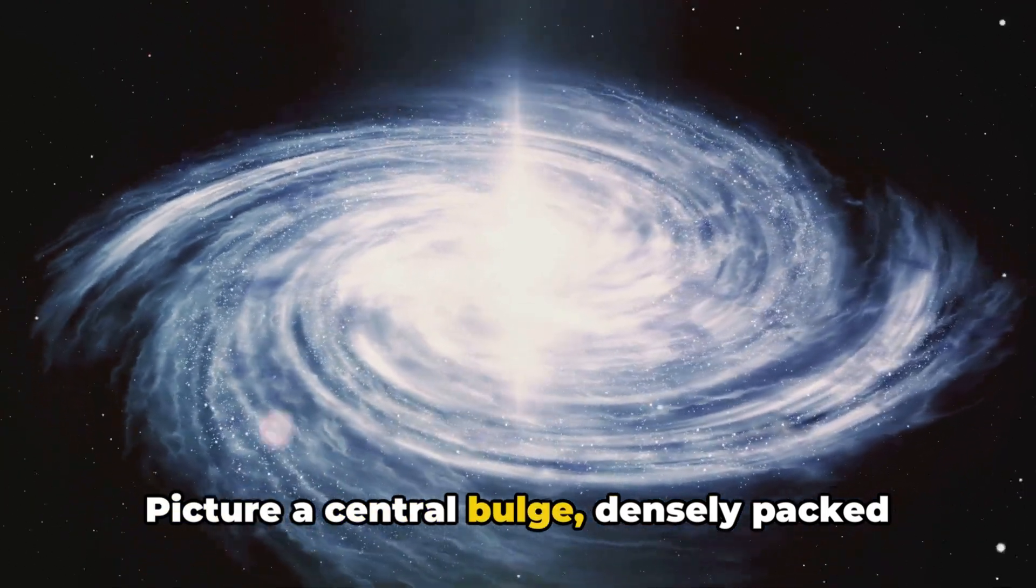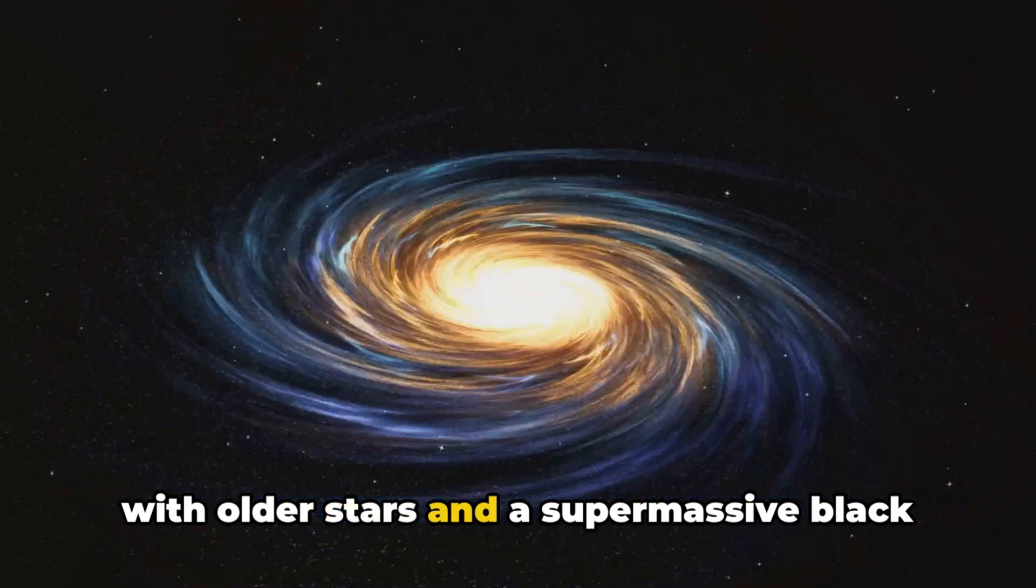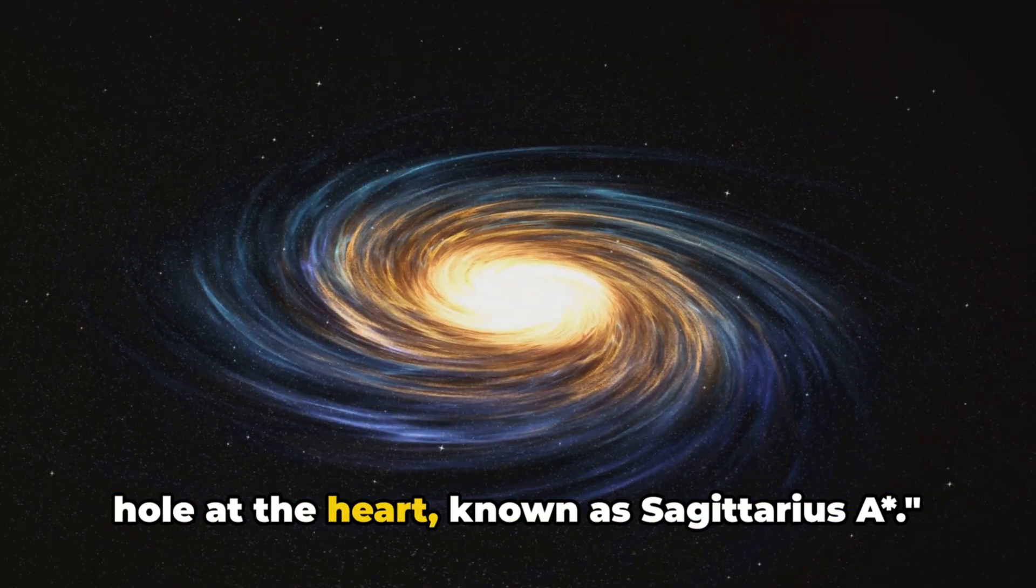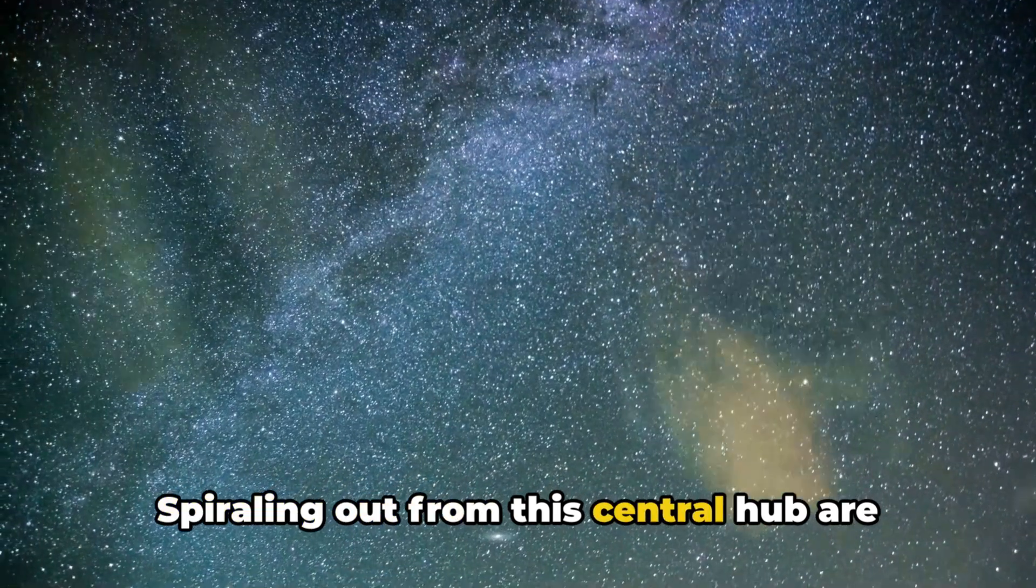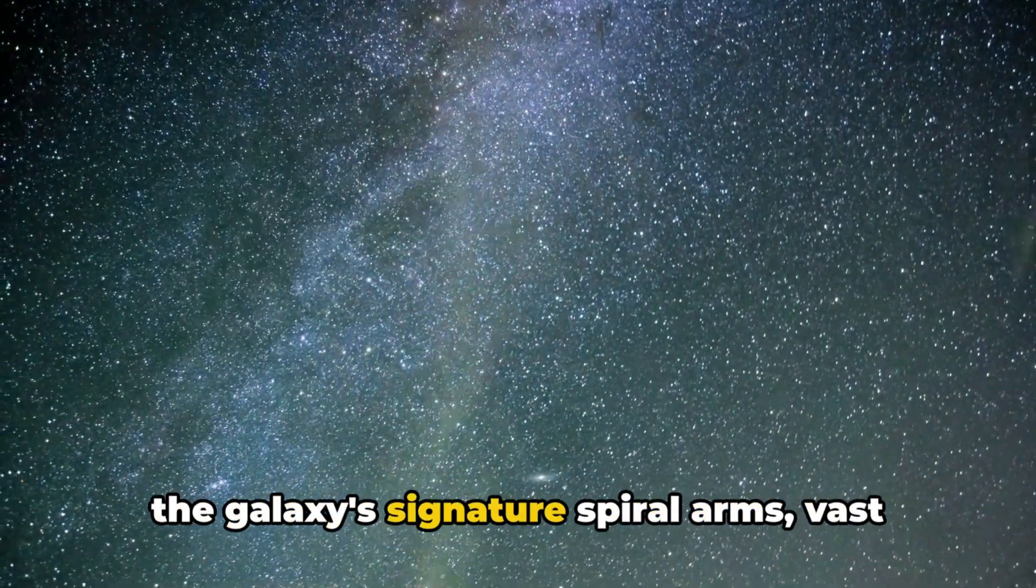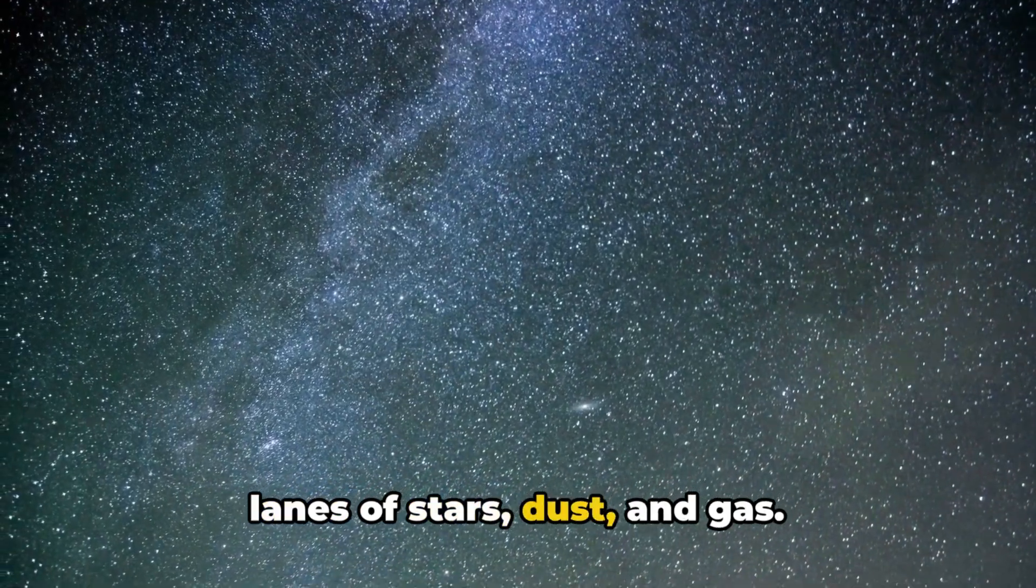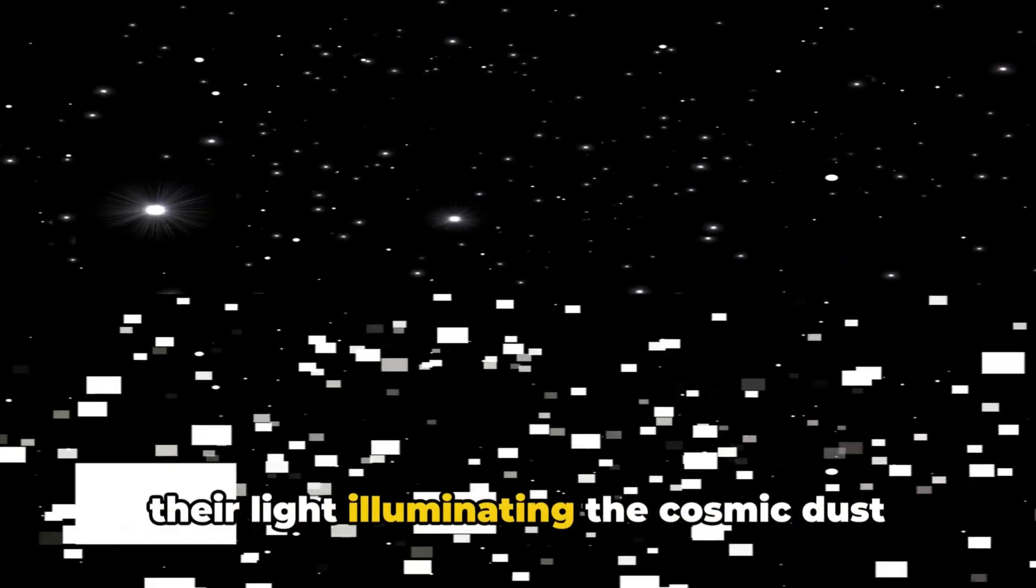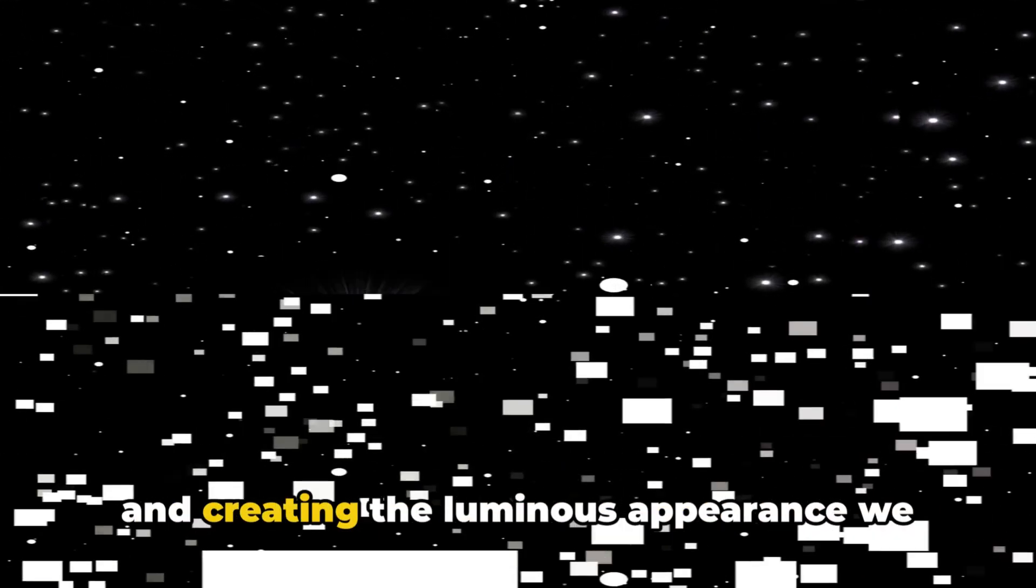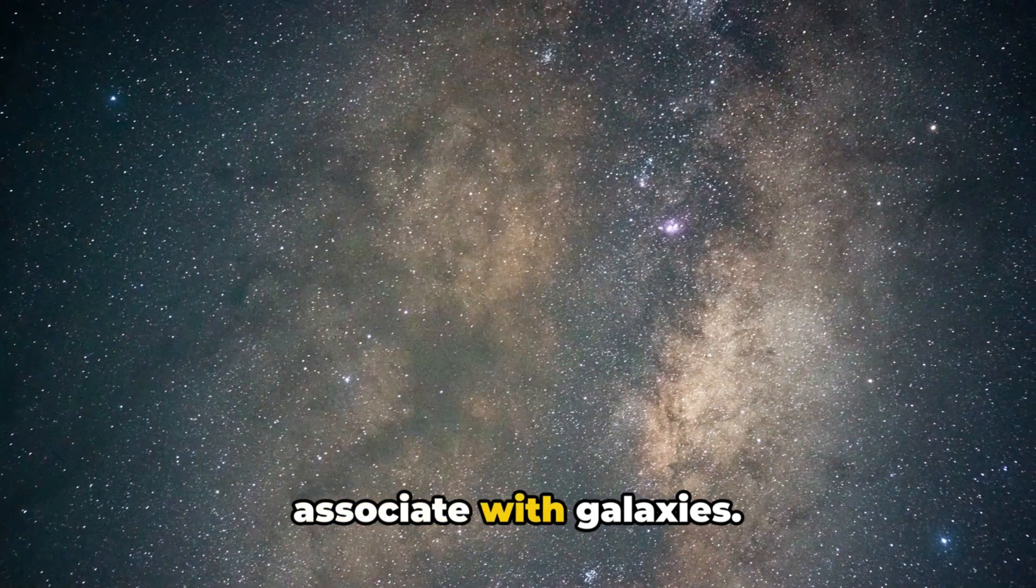Picture a central bulge, densely packed with older stars, and a supermassive black hole at the heart, known as Sagittarius A. Spiraling out from this central hub are the galaxy's signature spiral arms, vast lanes of stars, dust, and gas. These arms are where new stars are born, their light illuminating the cosmic dust and creating the luminous appearance we associate with galaxies.